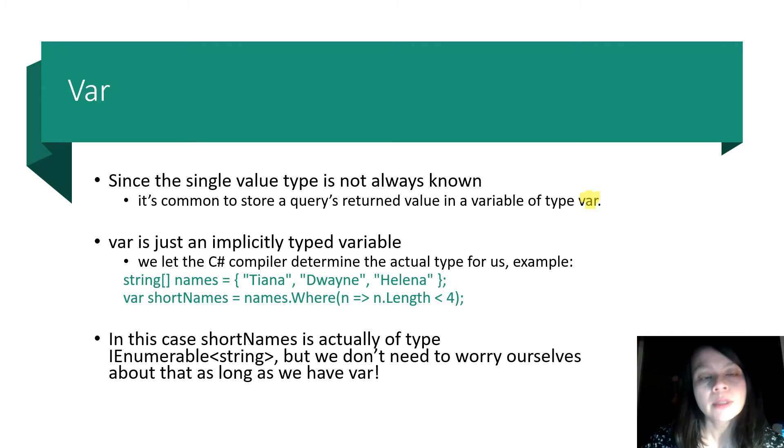So var is just an implicitly typed variable. We let the C# compiler determine the actual type for us, like in this example. So we have the string names here, Tiana, Duena, Helena, and then we have short names as var. In this case, short names is actually of type IEnumerable<string>, but we don't need to worry about that as long as we have var.